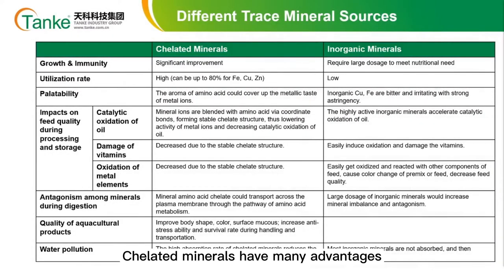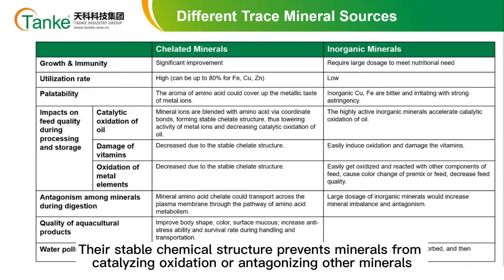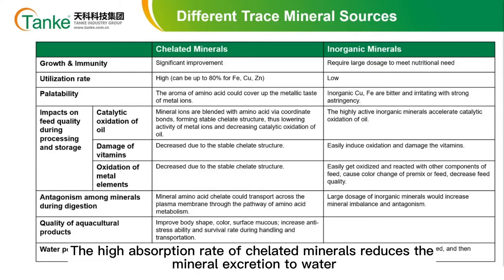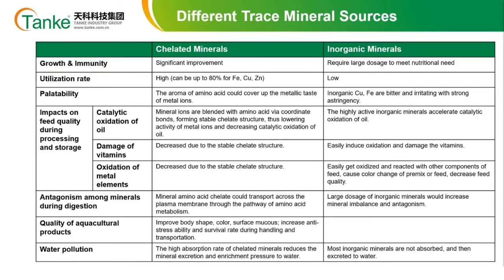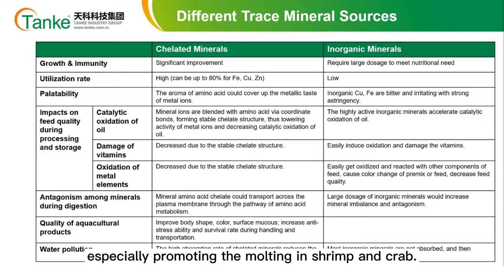Chelated minerals have many advantages. For example, utilization rate could be up to 80%, and they don't have a metallic taste. Their stable chemical structure prevents minerals from catalyzing oxidation or antagonizing other minerals. The high absorption rate of chelated minerals also reduces mineral excretion into water. Because of these advantages, chelated minerals improve the growth performance of aquatic animals, especially promoting molting in shrimp and crab.